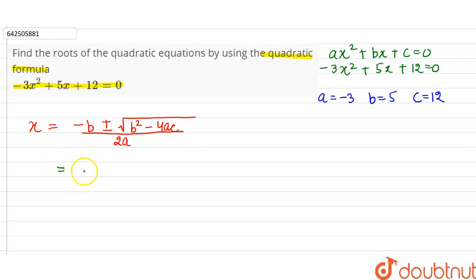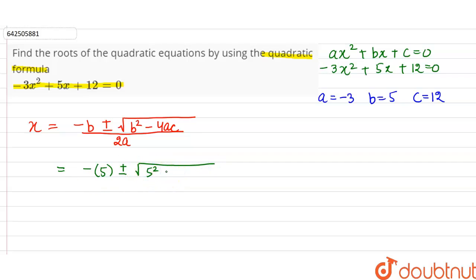So let's substitute the values of a, b and c in the formula. So minus b means minus 5, plus minus under root of b square minus 4ac — that is 5 square minus 4 into a which is minus 3, into c which is 12 — divided by 2a, which is 2 into minus 3.